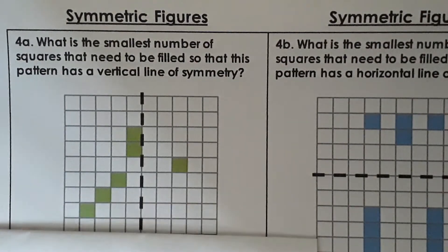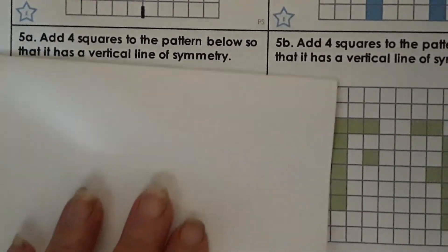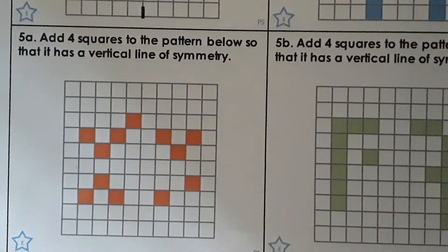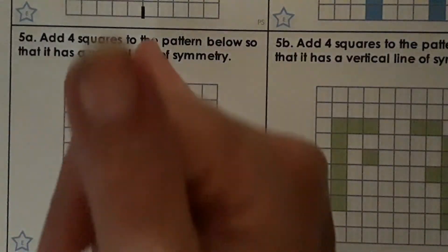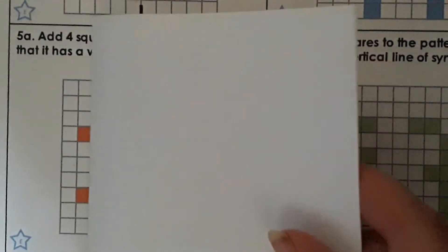All right going through and this time rather than add three squares to the pattern like we did for the developing, this time we need to add four squares to the pattern below so that it has a vertical line of symmetry. All right so our vertical line of symmetry is the one going up and down. All right so we need to add four squares.